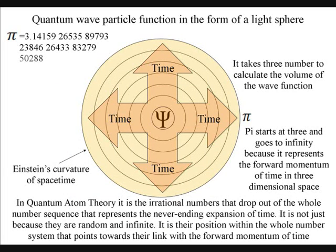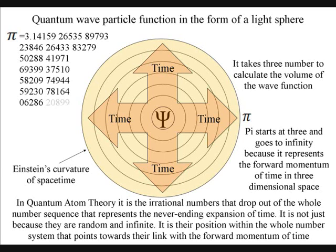In quantum atom theory, the irrational number pi is a physical constant and represents the expanding curvature of space-time. It is not just because it is random and carries on expanding forever. Its position within the whole number system points towards its link with the forward momentum of time.